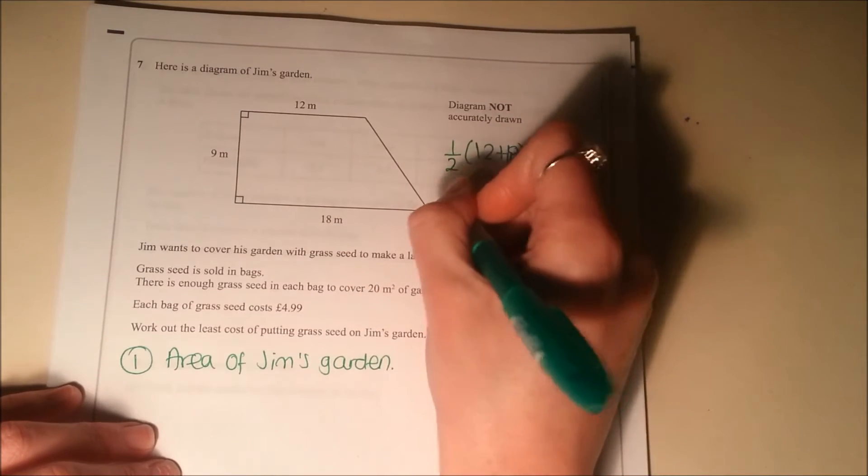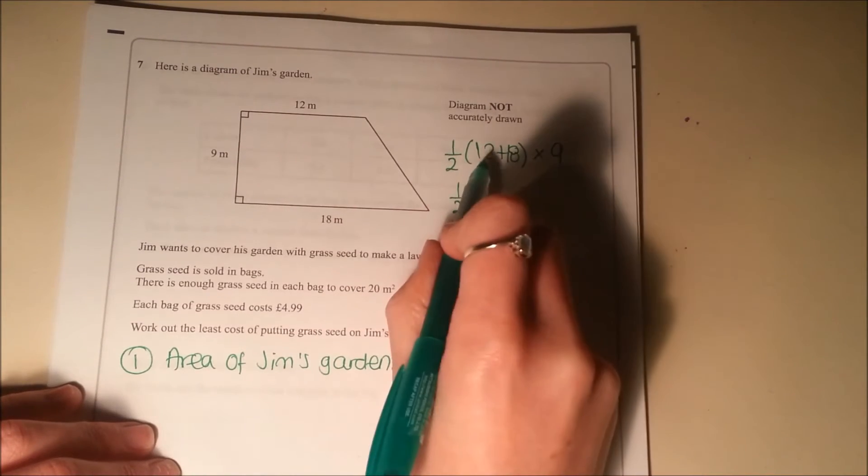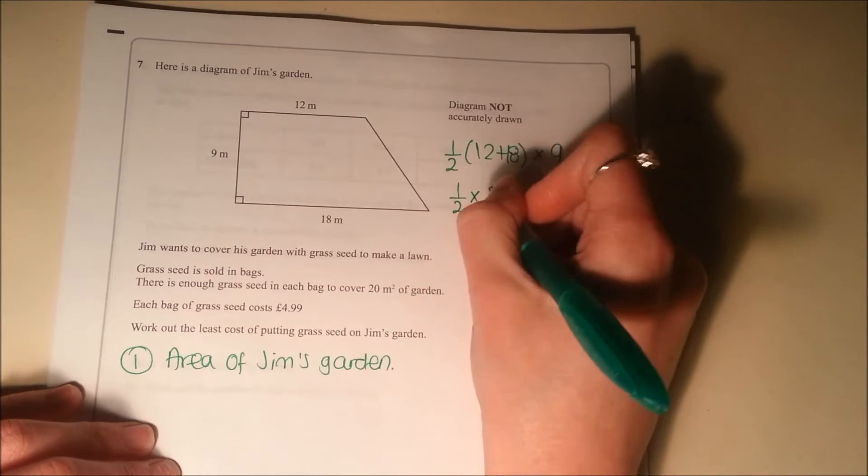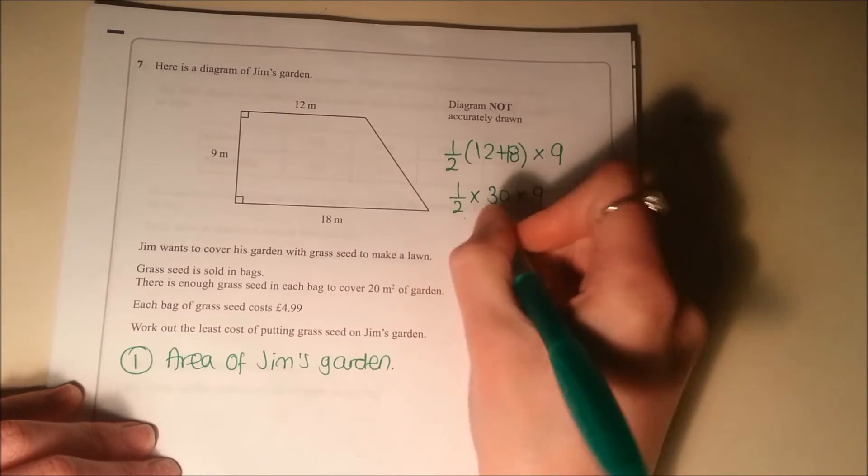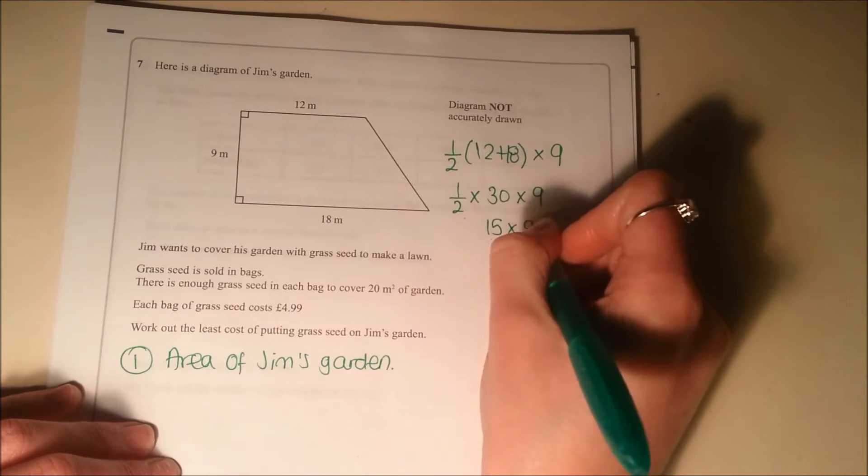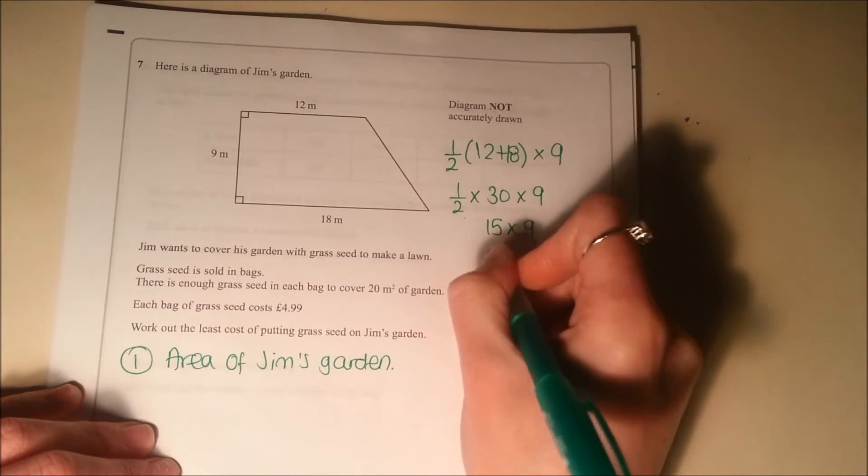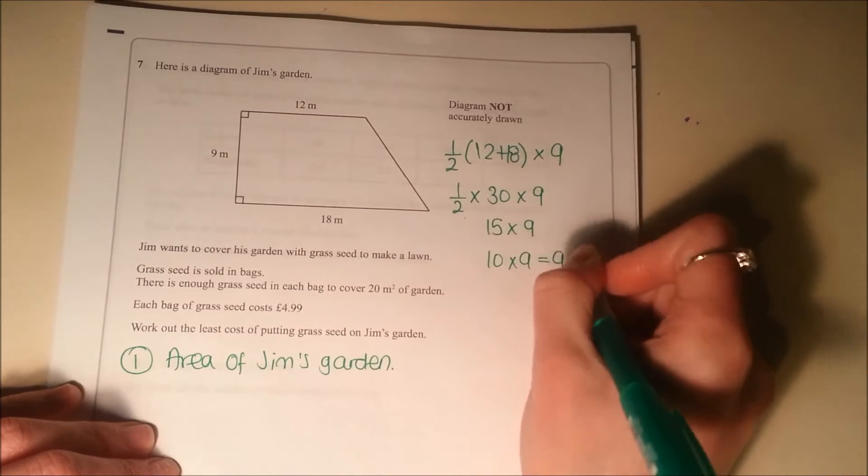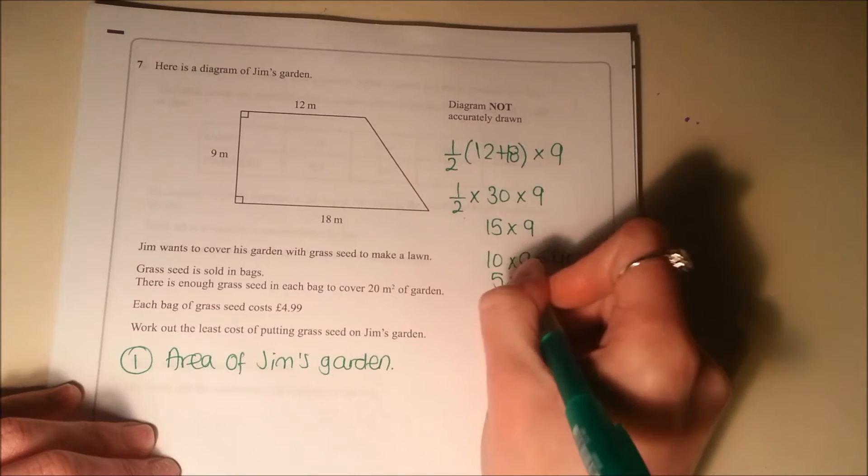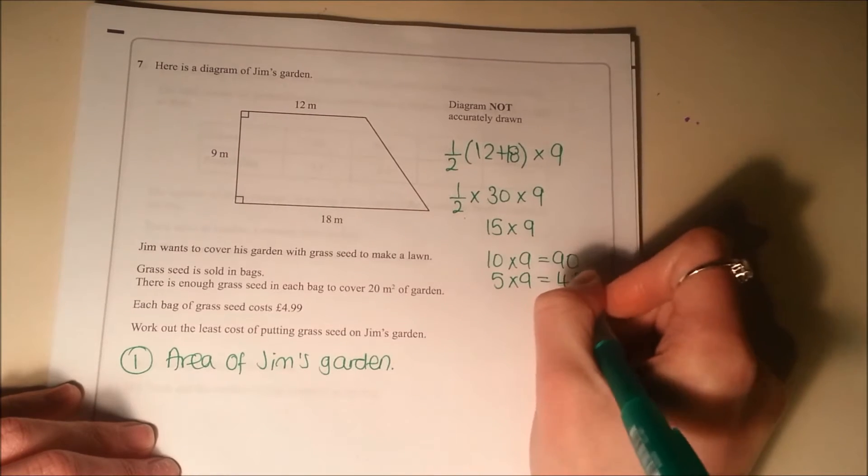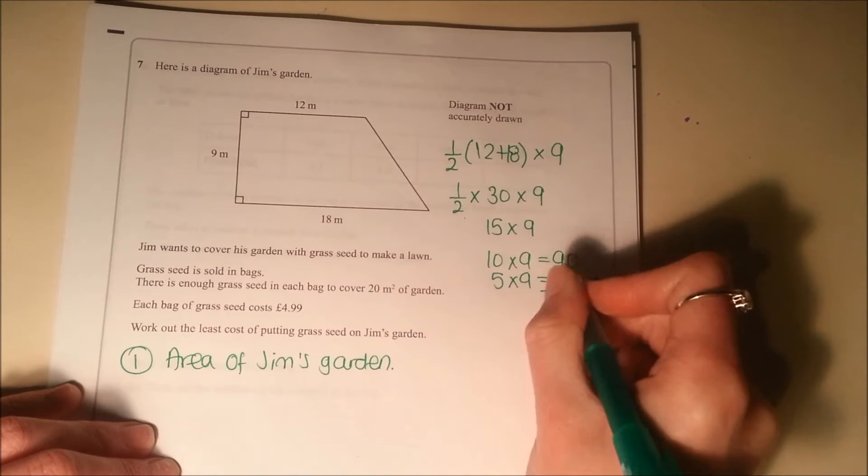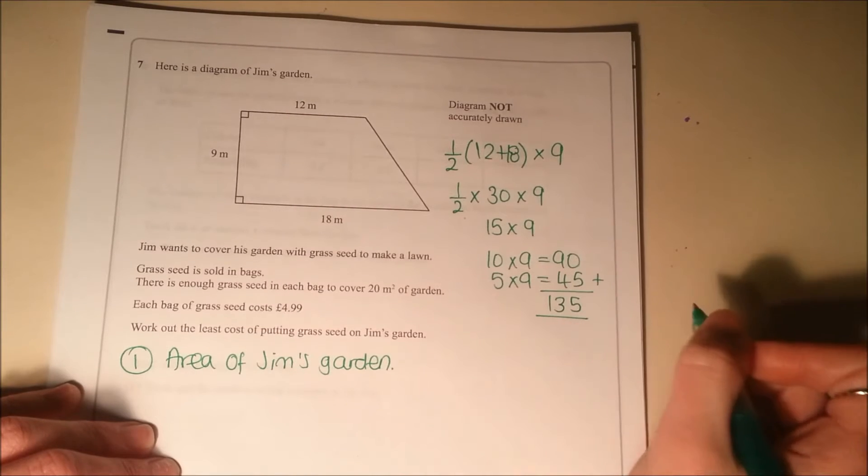So that would be a half of 12 and 18 is 30 times 9. So half of 30 is 15. 15 times 9, split that into 10 times 9, which is 90, and 5 times 9, which is 45. Add them together to get 135.